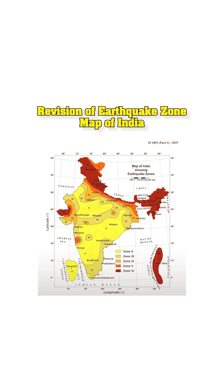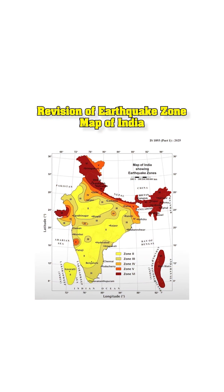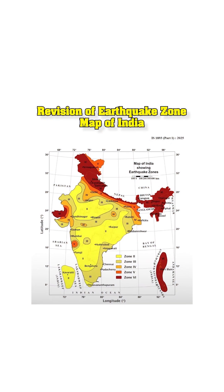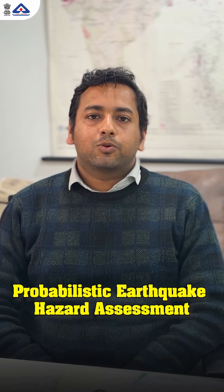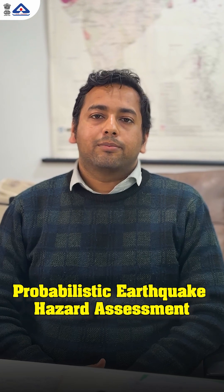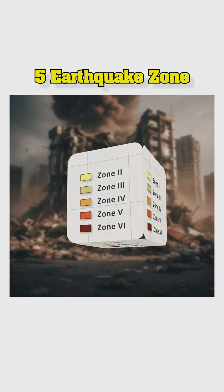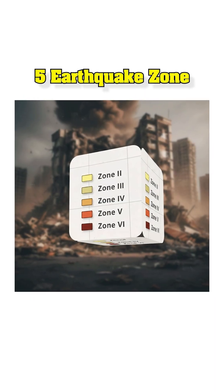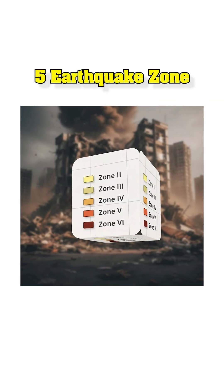The major changes made in this revision are: first, revision of the earthquake zone map of India, which is now based upon probabilistic earthquake hazard assessment, and where the country is now classified into 5 earthquake zones.